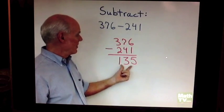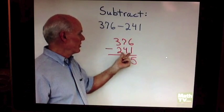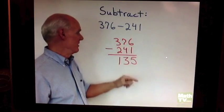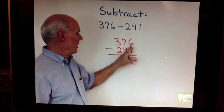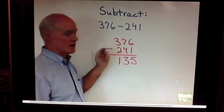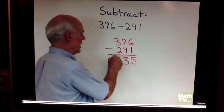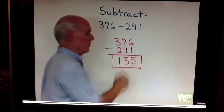Now, if I want to check my work I can add 135 and 241 and see if I get 376. 5 and 1 is 6, 3 and 4 is 7, 1 and 2 is 3, so a quick check shows that in fact that is the answer 135.